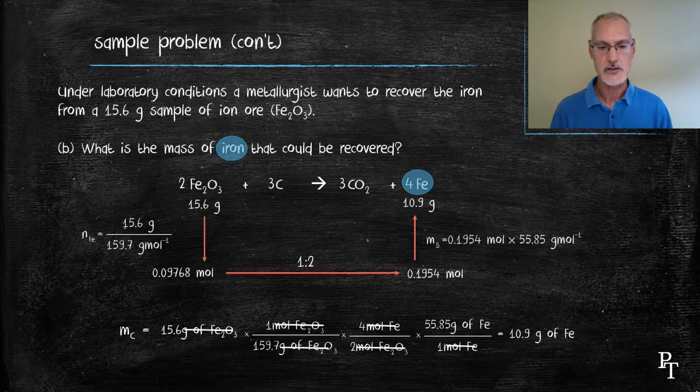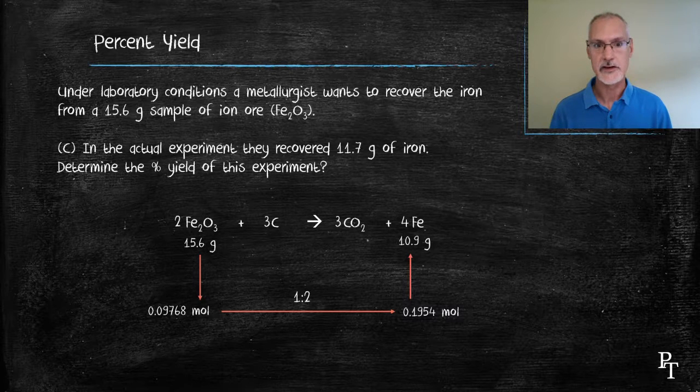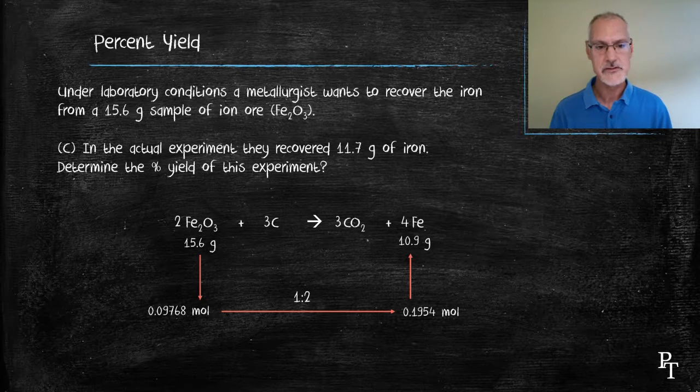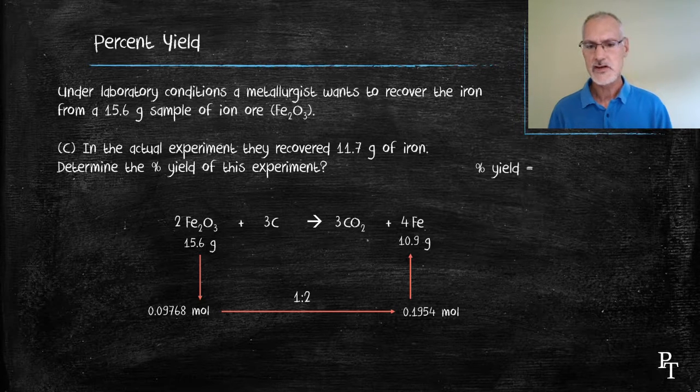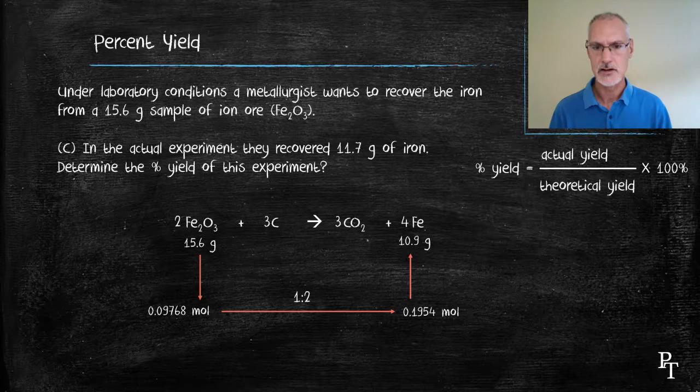Now a third part to this question. Someone actually goes ahead and performs this particular experiment and recovers in their crucible at the end of the experiment 11.9 grams of iron. And we're asked to determine the percentage yield of this experiment. Percentage yield by definition is the actual amount obtained divided by the theoretical amount times 100.